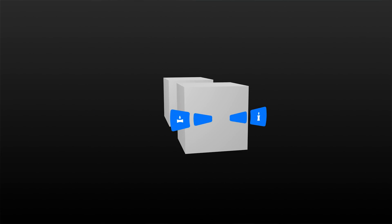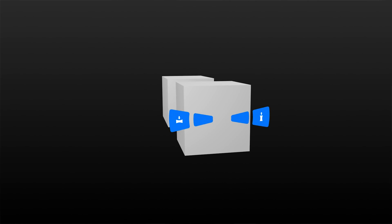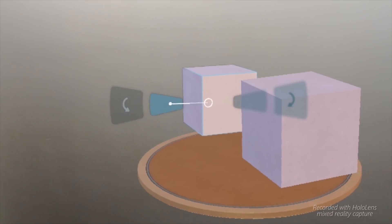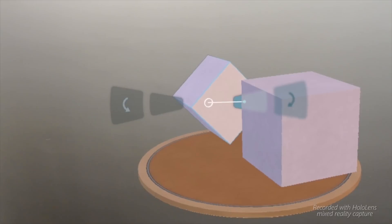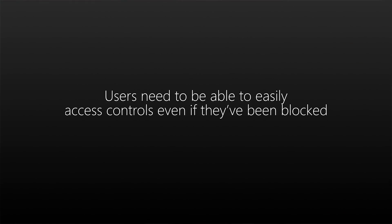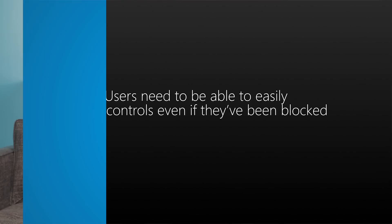Sometimes users need to interact with a hologram that's actually behind another hologram, which unfortunately blocks the UI. To keep the UI visible, we tried moving it close to the user so it couldn't get blocked, but then it wasn't comfortable to look at a UI that was near while simultaneously looking at a hologram that was far away. If we moved the UI in front of the closest hologram to the user, it felt detached from the hologram it was actually affecting. We finally ghosted the UI — this puts the UI at the same distance as the hologram it's affecting so they feel connected, and allows the user to interact with it even though it's been obscured. Users need to be able to easily access controls even if they've been blocked, so figure out methods to ensure users can complete their tasks no matter where their holograms are in the real world.